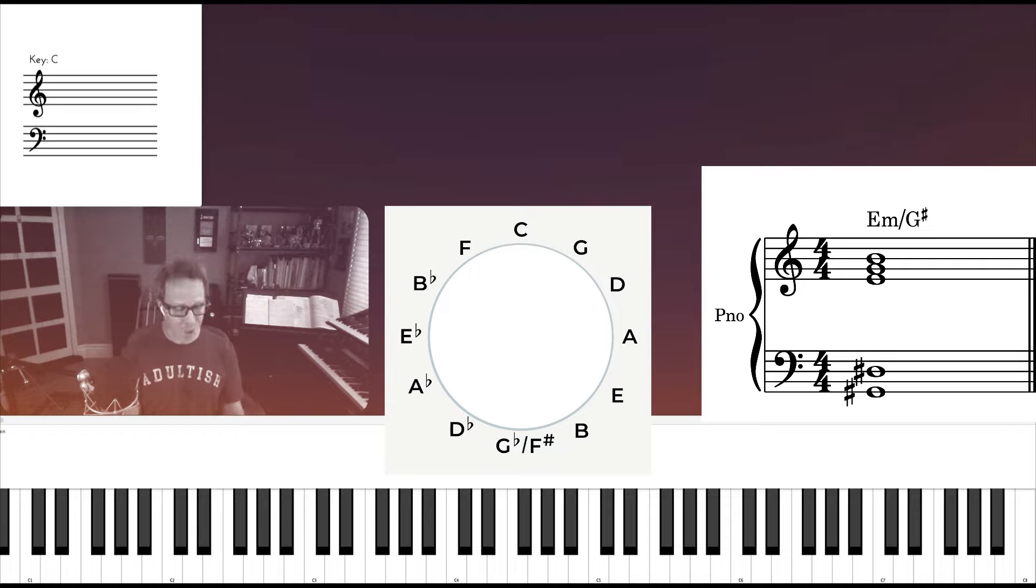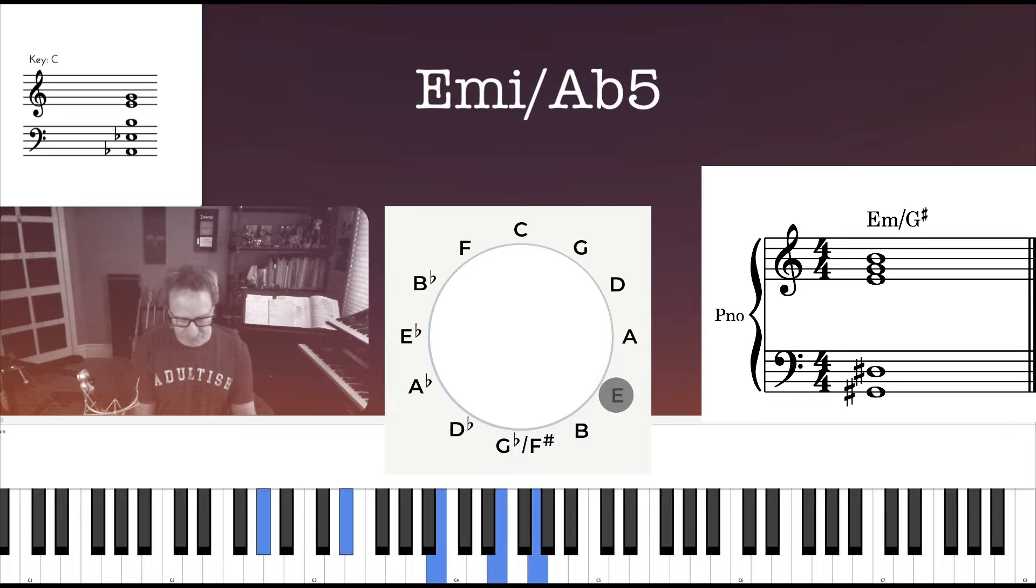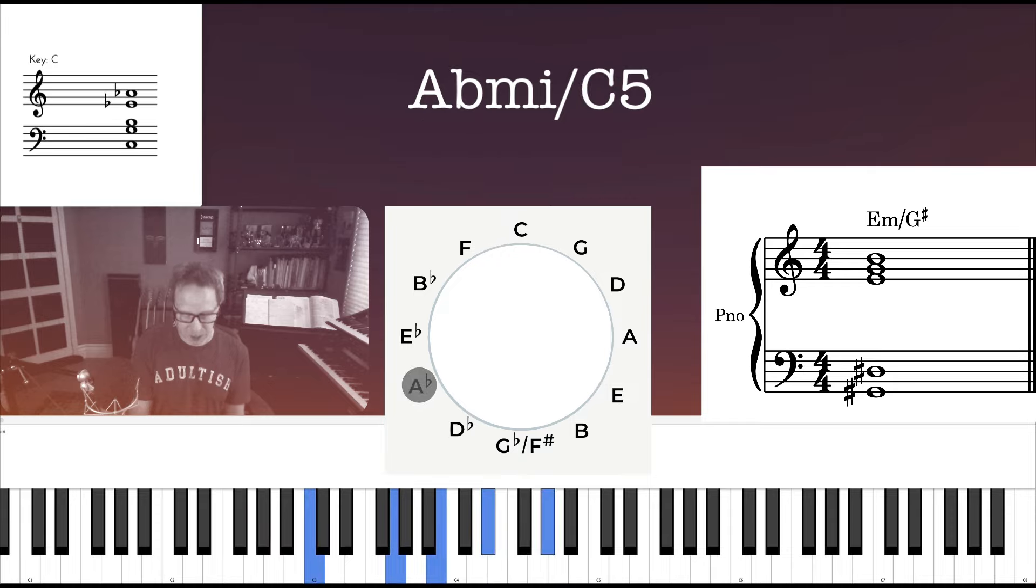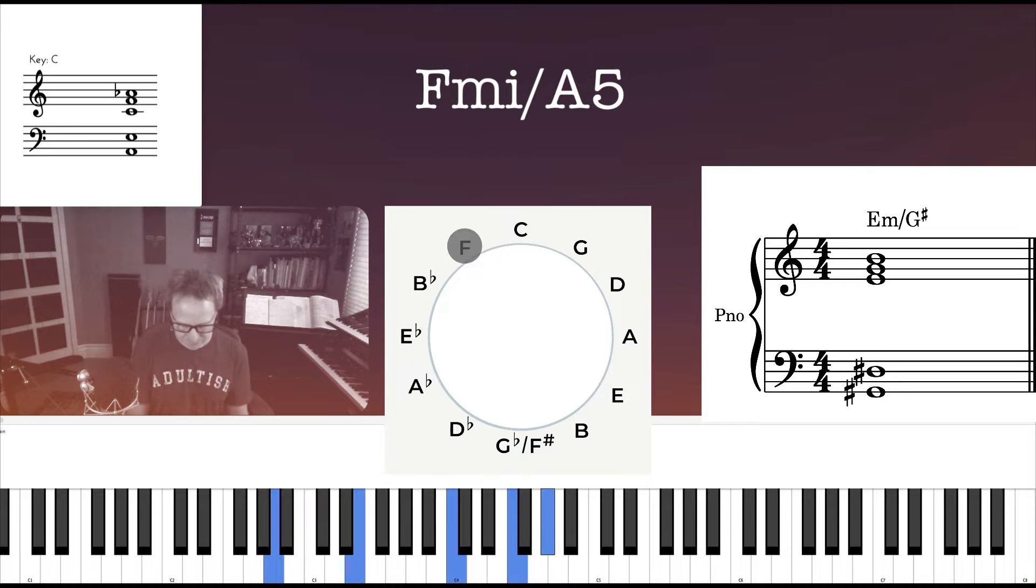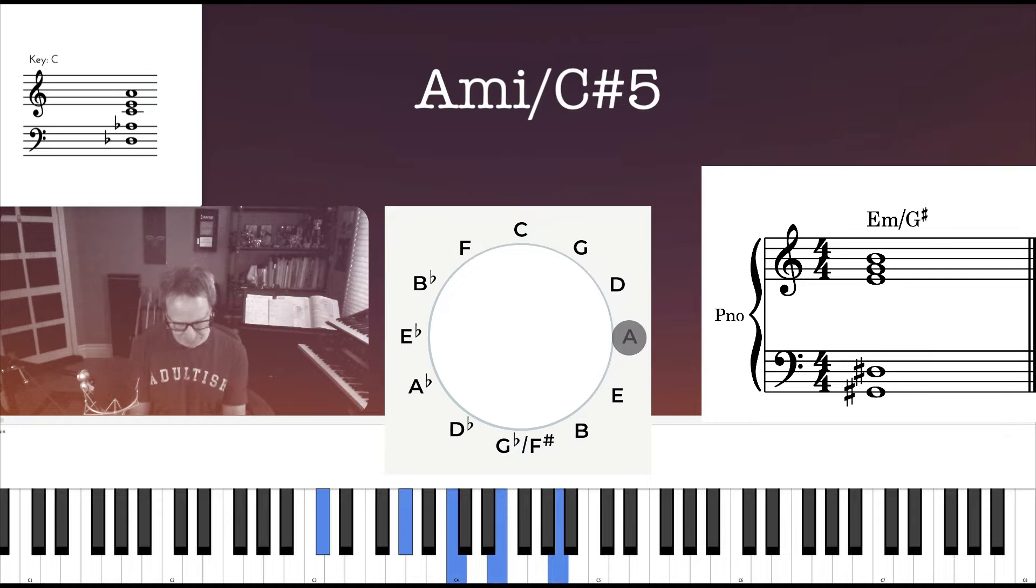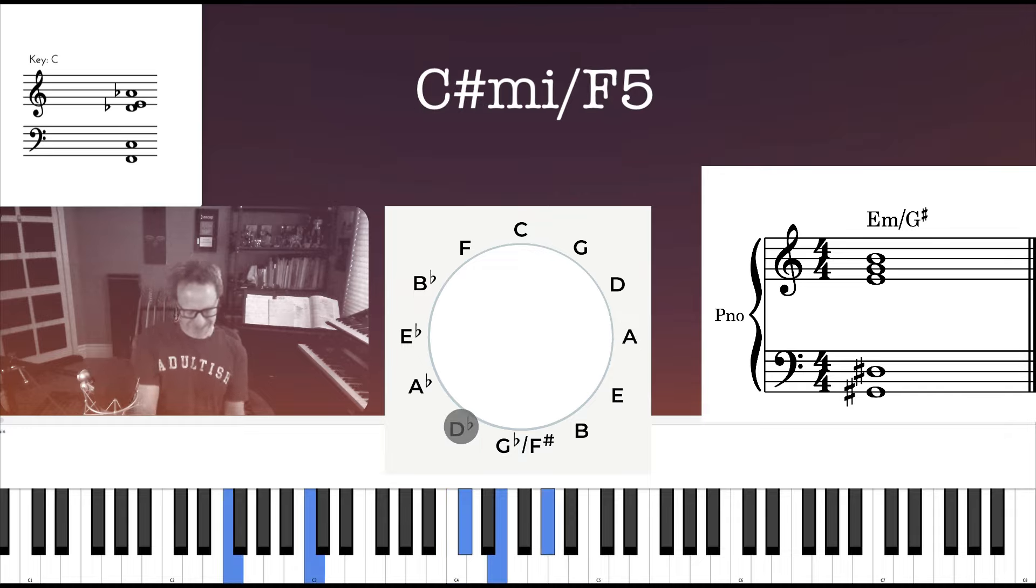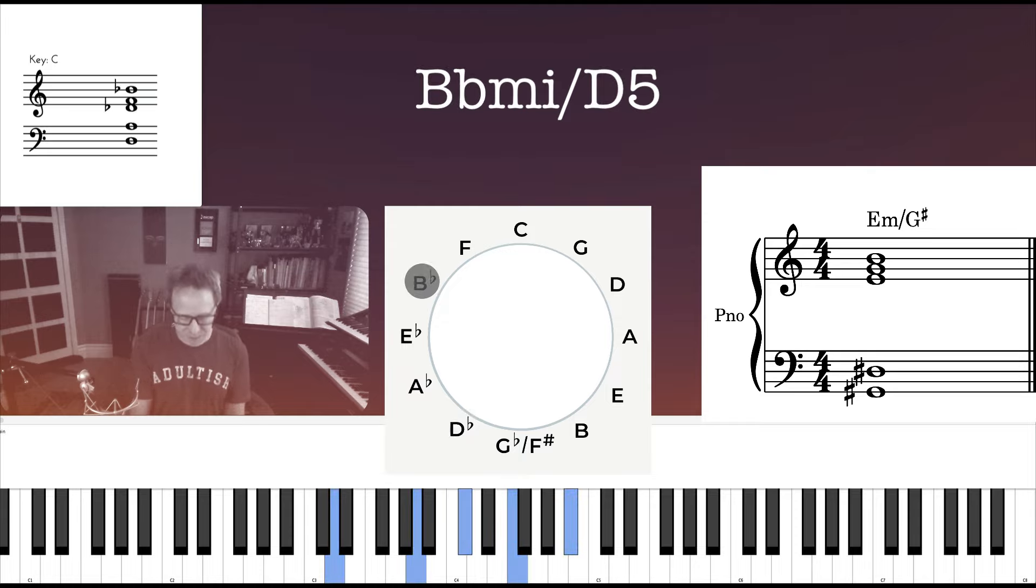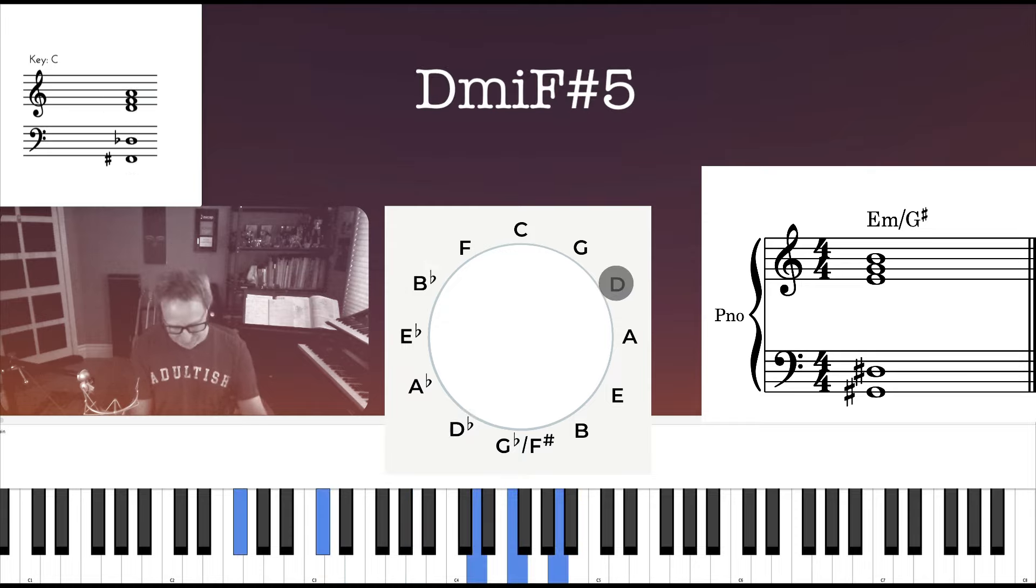So starting in C minor over E5, that's going to sound like this. E minor over Ab 5. Ab minor over C5. F minor over A5. A minor over C sharp 5. C sharp minor over F5. Let's do a couple more here. B flat minor over D5. D minor over F sharp 5. And G sharp minor over B5.